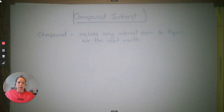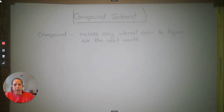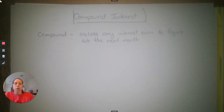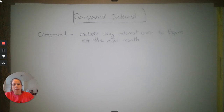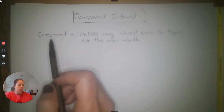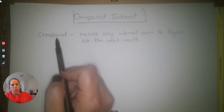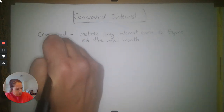In other words, if you put a thousand dollars in the bank and you earn five dollars the first month, now you have a thousand and five dollars. The next month you earn interest on a thousand and five dollars, and whatever interest you earn that second month gets added in — and so on. That's compounding interest; that's how you figure out interest for almost everything.